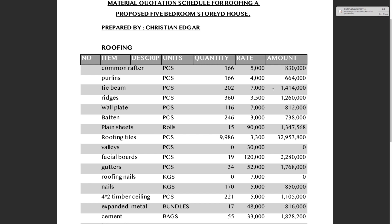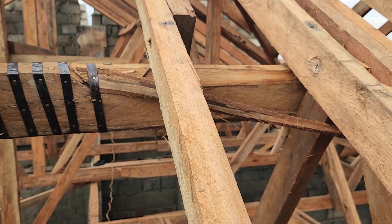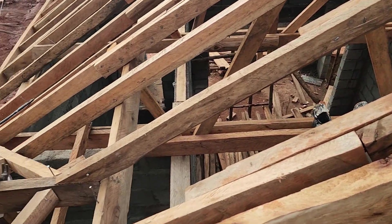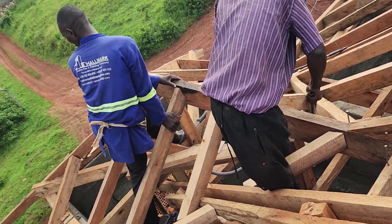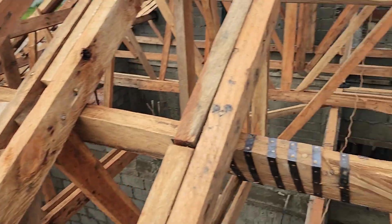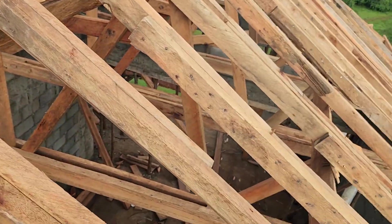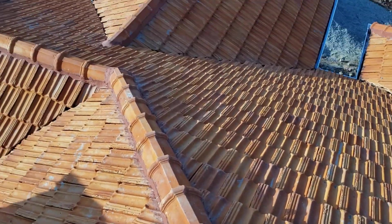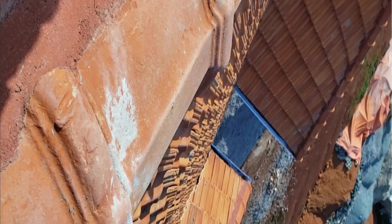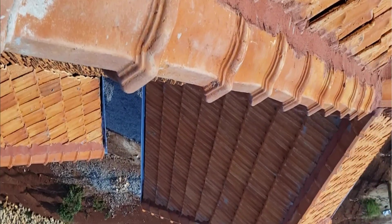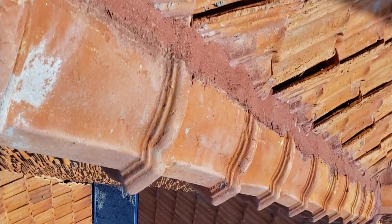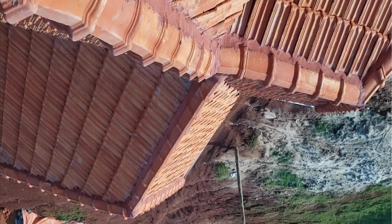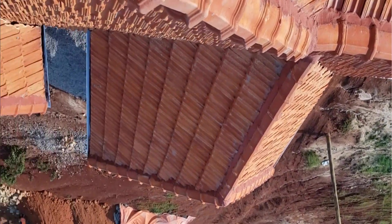Tie beams run horizontally from wall plate to wall plate — they are the largest timber sizes in roofing. We bought 202 pieces at 7,000 shillings each, costing us 1,414,000 shillings. Ridges — we used clay ridges because we are roofing with roofing tiles. We bought 360 pieces at 3,500 shillings each, costing us 1,260,000 shillings.